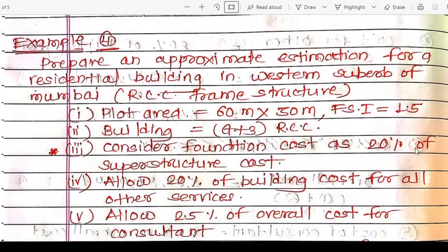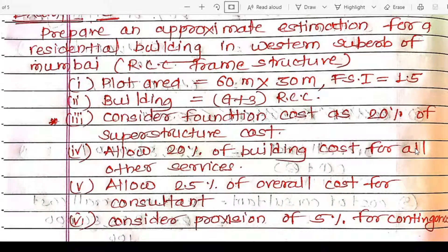We will now see another problem: prepare an approximate estimate for a residential building in the western suburb of Mumbai, RCC frame structure. The plot area is 60 meters by 30 meters. The FSI is 1.5. The building is G plus 3 RCC. Consider foundation cost as 20% of the superstructure cost. Allow 20% of building cost for other services, 2.5% of overall cost for consultancy, and 5% for contingency.